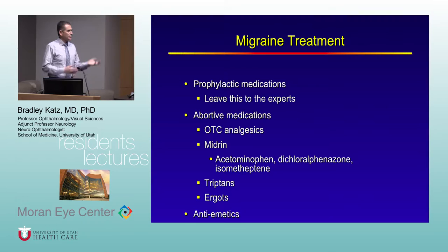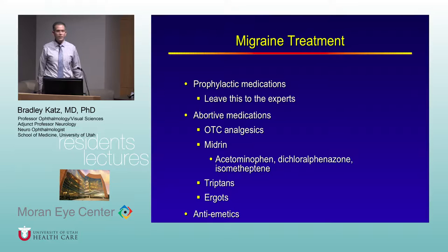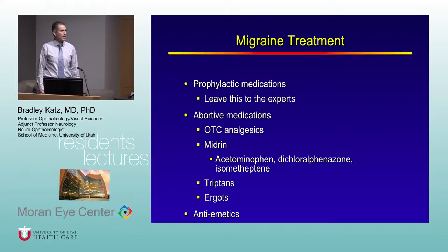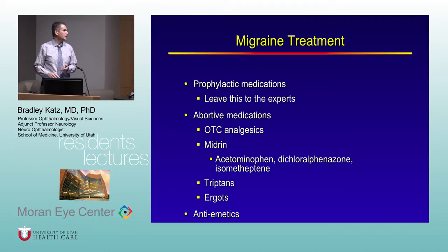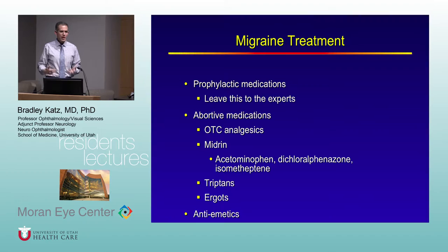Prophylactic medications should be left to headache specialists and neurologists. For abortive medications, over-the-counter analgesics can be very helpful — some patients' migraines are well treated with naproxen or Excedrin Migraine (aspirin, acetaminophen, and caffeine). Alka-Seltzer is liked by some because it settles the stomach, which is helpful since many of these patients have nausea at the same time.